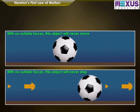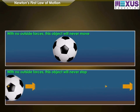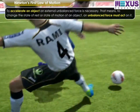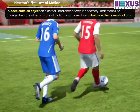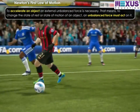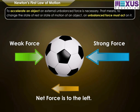For example, to accelerate an object, an external unbalanced force is necessary. That means to change the state of rest or state of motion of an object, an unbalanced force must act on it.